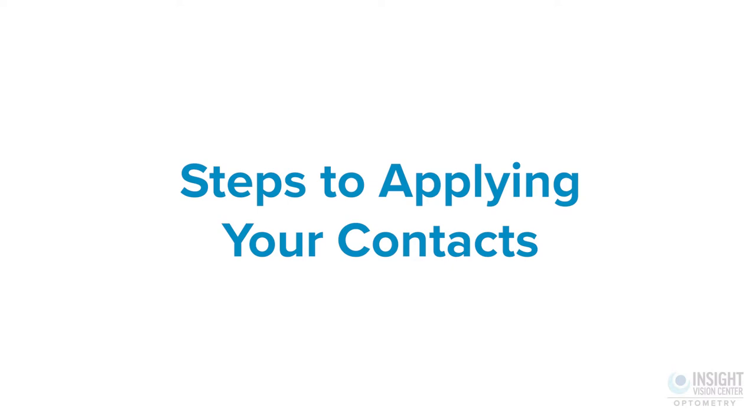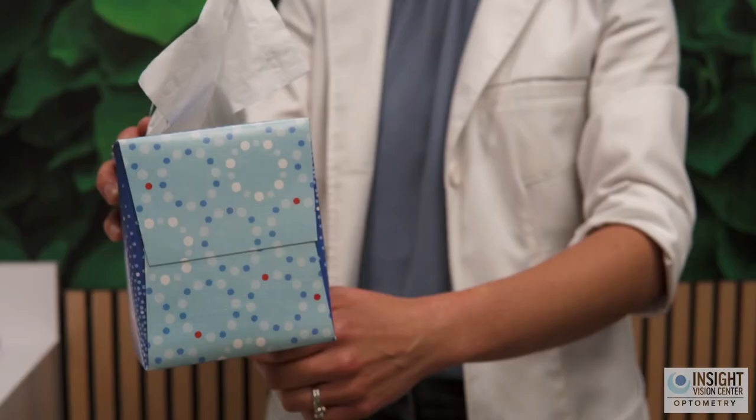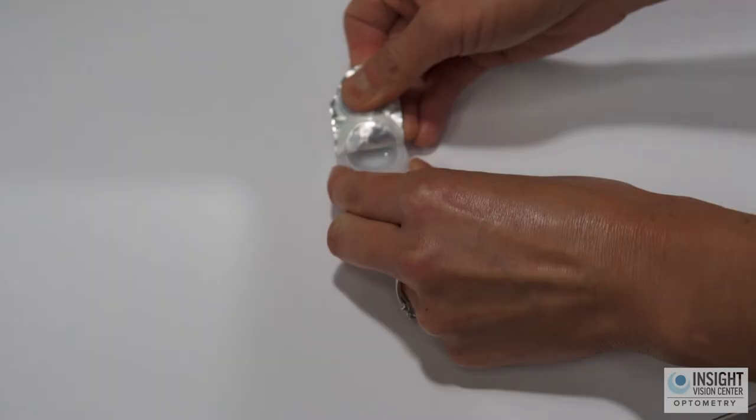Steps to applying your contacts. Step 1: Wash your hands with soap. Dry your hands with a paper towel or lint-free hand towel. Do not dry your hands with a tissue because it can put lint onto the contacts or the tips of your fingers.